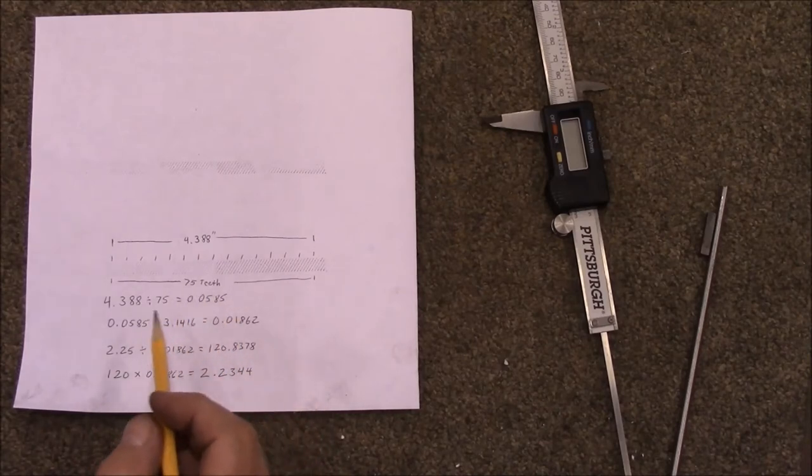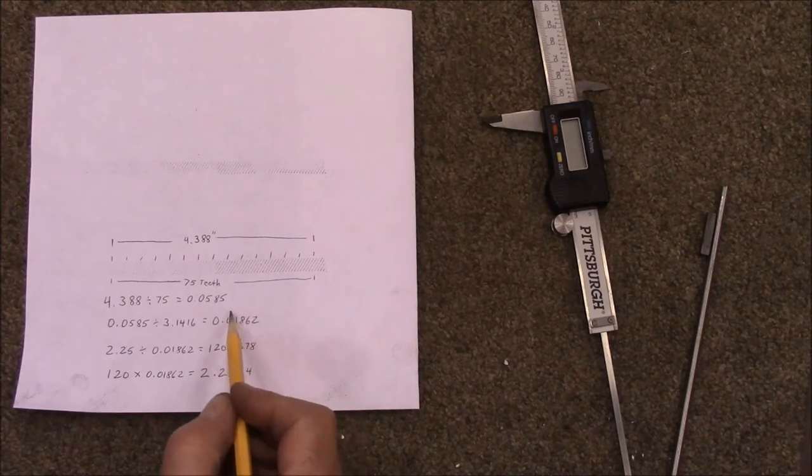All right, then you take that number and you divide it by pi. And that gives you this number right here.